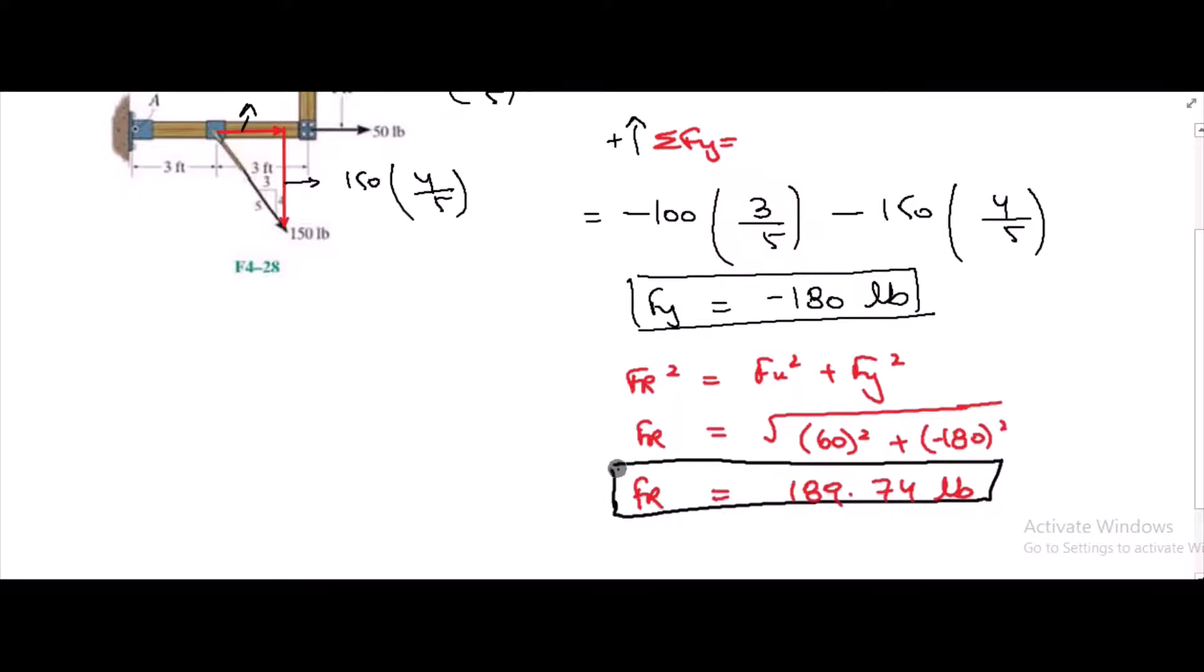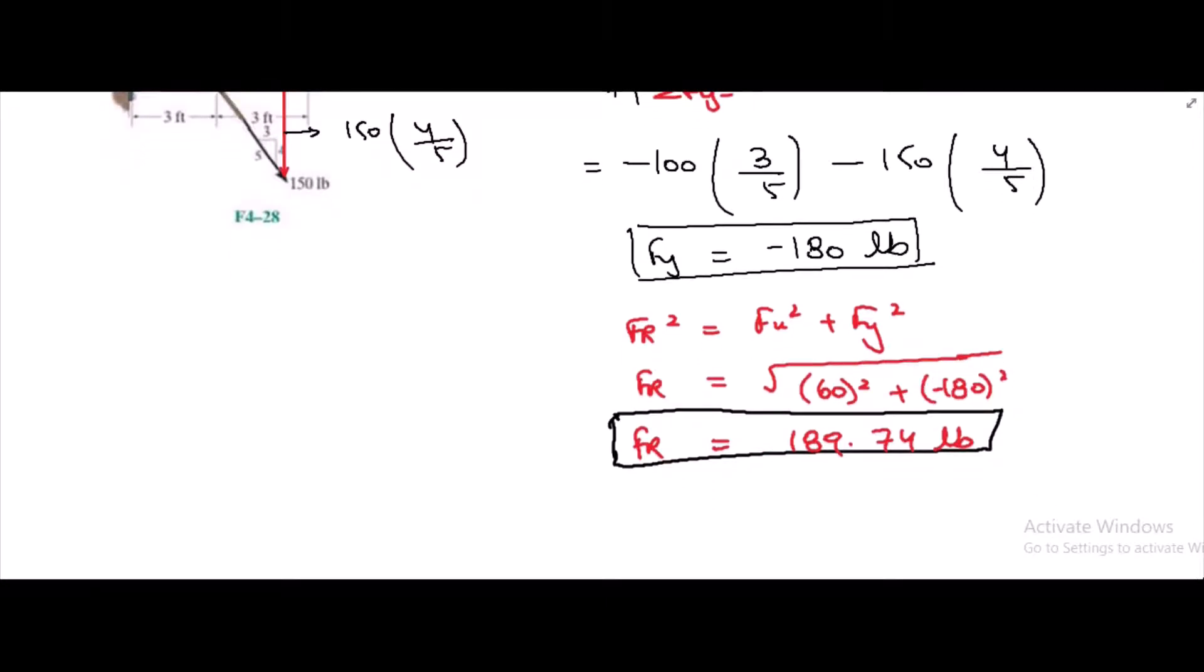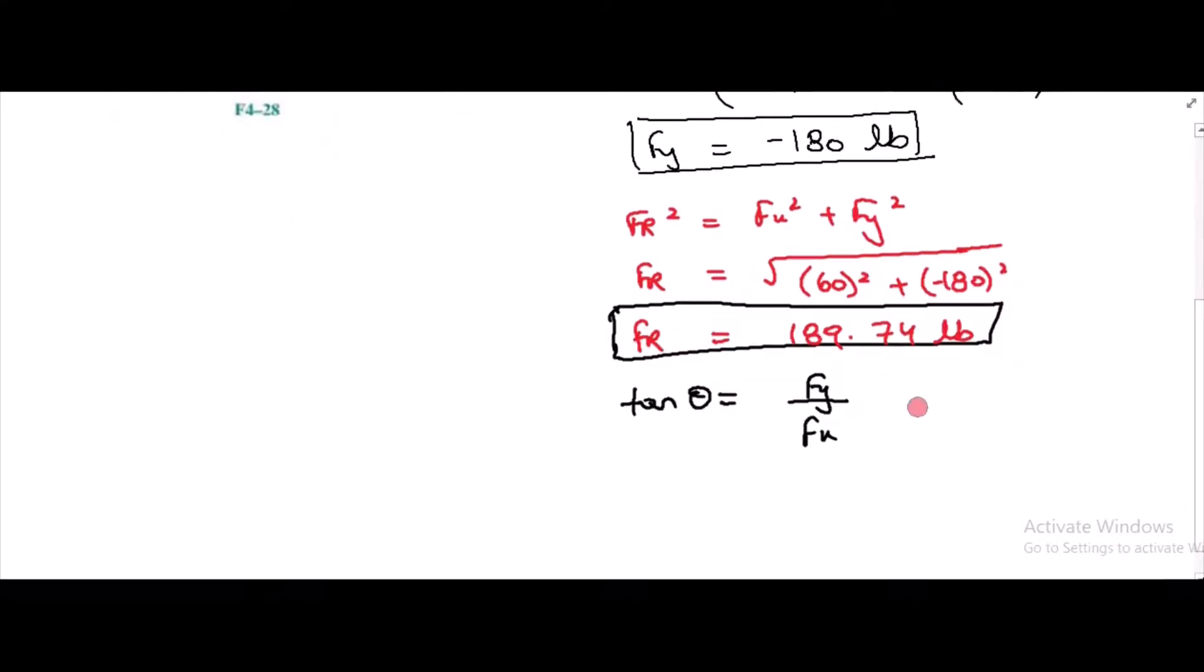Now we have found the magnitude of the resultant force. For its direction, we can use tan theta. We know that tan theta equals Fy over Fx, which is negative 180 over 60. So from here, theta equals negative 71.6 degrees, which means that our force is lying in the fourth quadrant making an angle 71.6 degrees with the horizontal axis. So this is the direction of the resultant force.